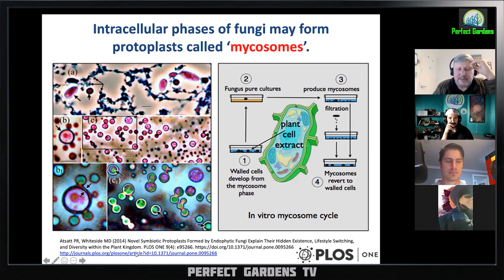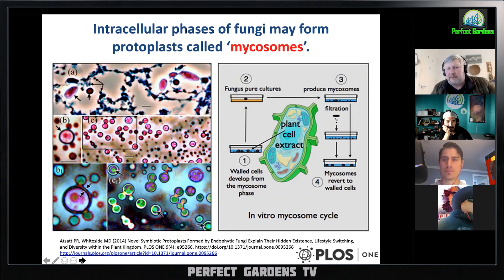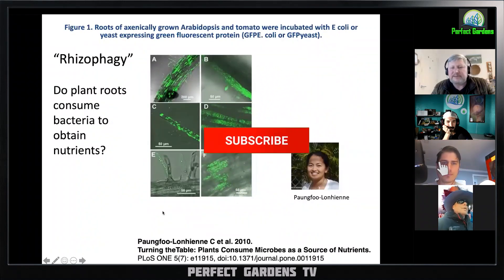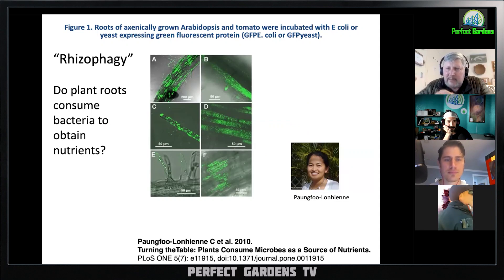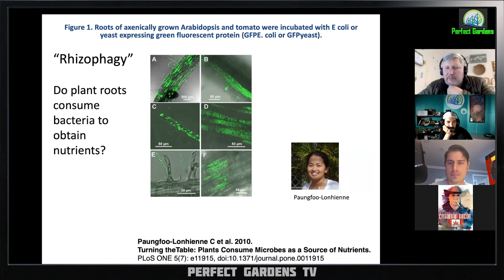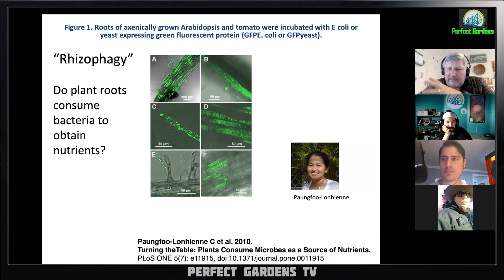This work was published in PLOS One, one of the open access journals, back in 2014 by Peter Atzat and Michael Whitesides — not from my lab, but from other labs. This process of root internalizing microbes was first discovered in 2010 by an Australian group in Queensland, Australia. They found that yeast and bacteria were going into root cells.